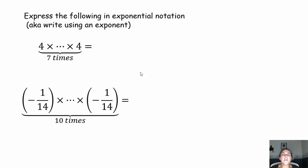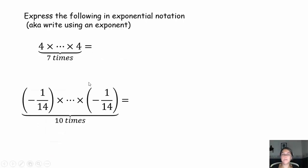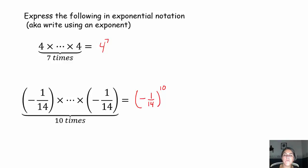I'd like you to express the following in exponential notation. Please pause the video, try it out, and come on back. Hopefully you see: if you multiply 4 by itself 7 times, that's just 4 to the seventh power. If you multiply negative 1/14 by itself 10 times, that's negative 1/14 to the tenth power. Make sure your base of negative 1/14 is inside the parentheses and the tenth power is outside the parentheses.